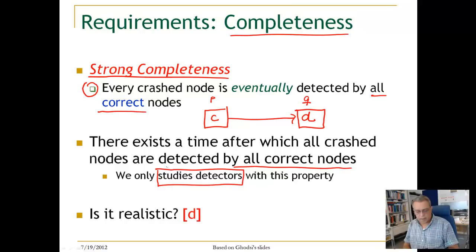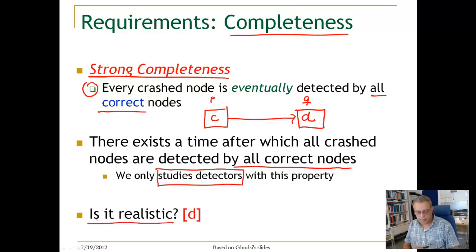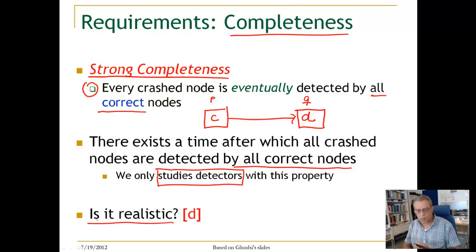This failure detector is quite realistic to implement in synchronous and partially synchronous systems. In partially synchronous systems, if you don't receive a message from a certain node after a time, you can always suspect it — suspect it means you say this node has failed — which ensures all crashed nodes are eventually detected.